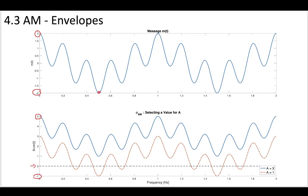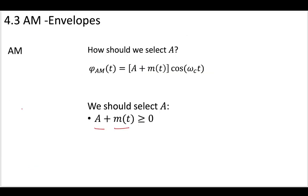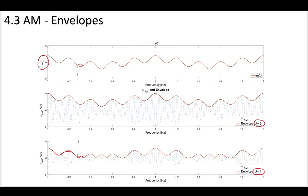So if you select a big enough A, you're going to be able to make A plus the message greater than zero. And as we saw, this is going to give us an envelope that's identical to the transmitted message, contains the same information as the transmitted message.